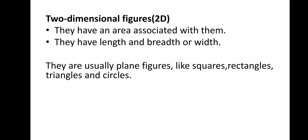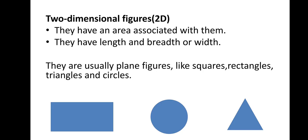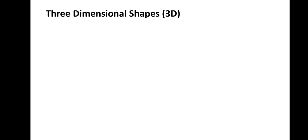So what are 2-dimensional figures? Figures or shapes having only 2 dimensions — length and breadth or width — with an area associated with them. They are usually plain figures like squares, rectangles, triangles, circles, pentagons, hexagons and octagons. One-dimensional figures do not have any area and can be used to make 2-dimensional figures. 2-dimensional figures have an area with 2 dimensions like length and breadth.